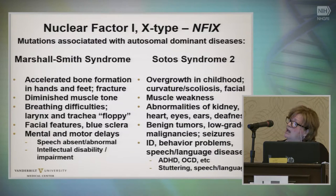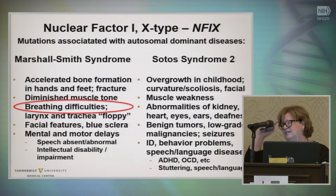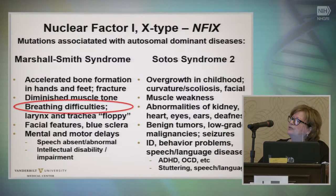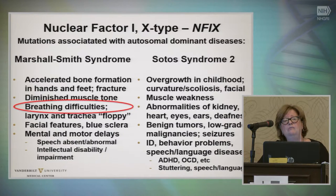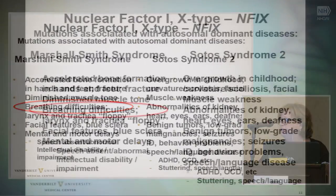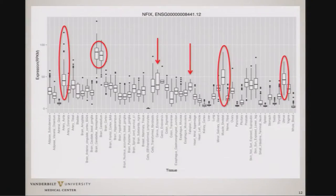The kids are living longer now because they watch for the breathing difficulties and try to anticipate better, but it was generally the breathing difficulties that were the most serious problem, often leading to death in childhood from associated pneumonias and breathing problems. In GTEx, the gene is highly expressed in some parts of the heart, very highly expressed in the brain, expressed in muscle — not surprisingly given the weakness observed.